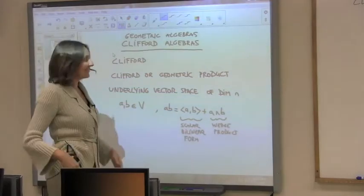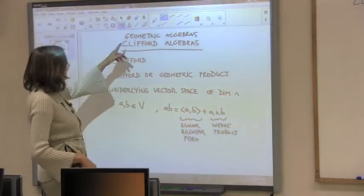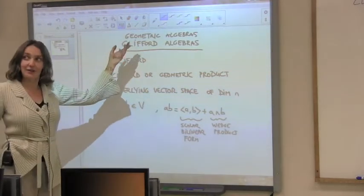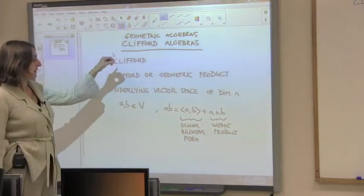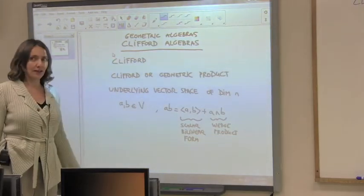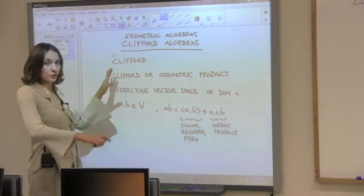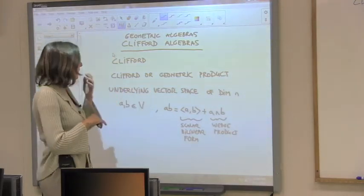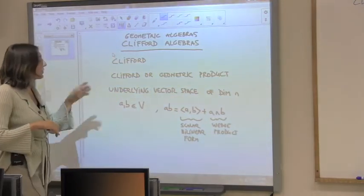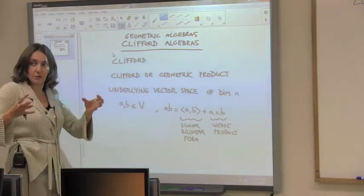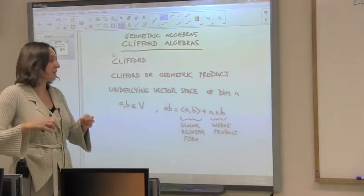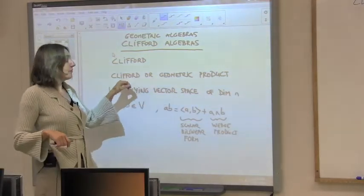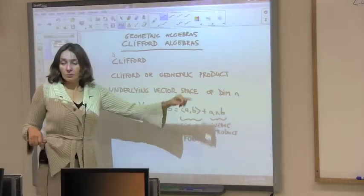Today we are going to talk about Clifford Algebras, also called Geometric Algebras. They were invented by Clifford. What we do is take a vector space — an underlying vector space — and define a product between elements of that vector space. That product is called the Clifford or Geometric Product.